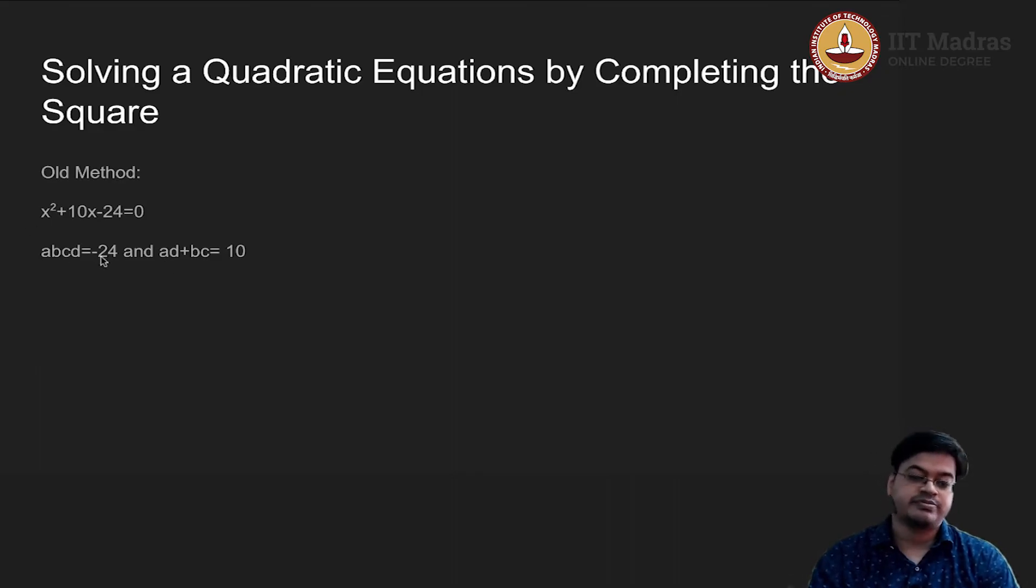I will essentially use a prime factorization theorem and get the prime factors of -24. If you rearrange the prime factors in such a way that the sum should be equal to 10, one such rearrangement is 12 and -2. So ad is 12 and bc is -2.